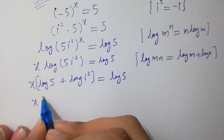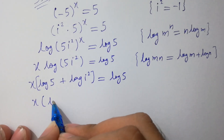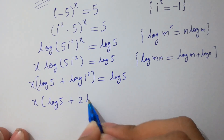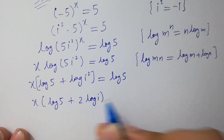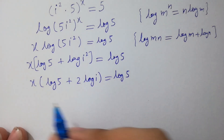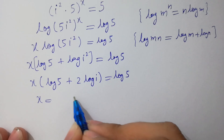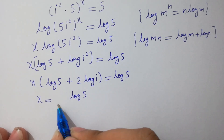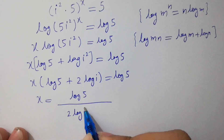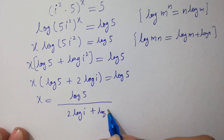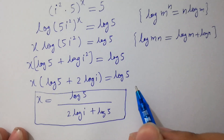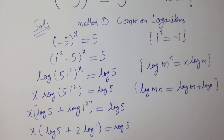So, x times (log 5 plus 2 log i) equals log 5. Therefore, x equals log 5 over (2 log i plus log 5). This is the correct answer by Method 1, common logarithms.